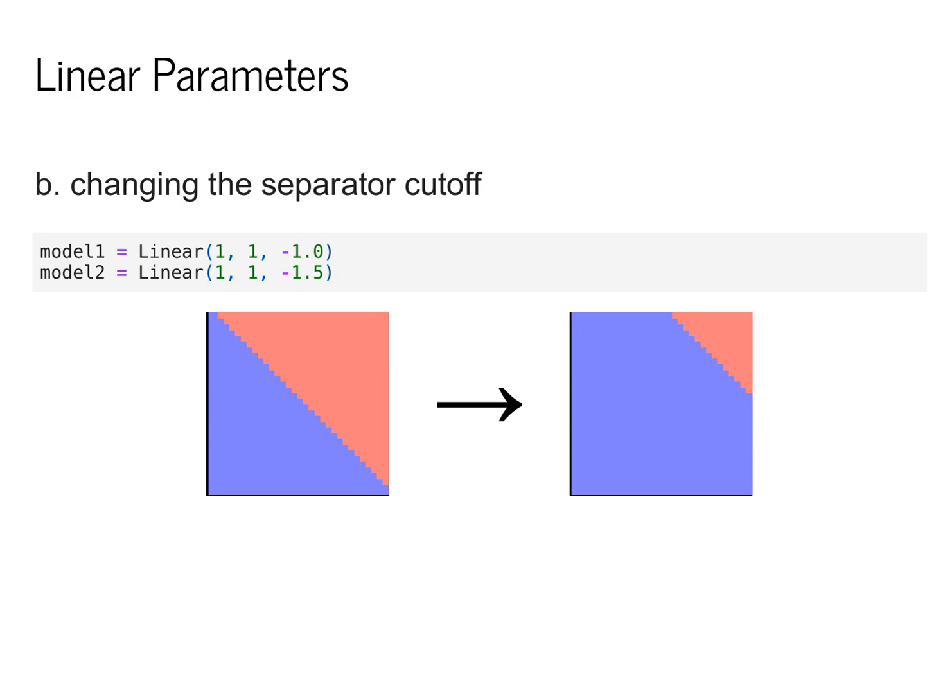The second thing we can do is to change the separator cutoff. We do this by changing the bias of the underlying model. So here we move the bias from negative 1 to negative 1.5 and we can see that we've transposed the red cutoff of the underlying data. This corresponds to simply making more of the space blue and less of it red in practice.